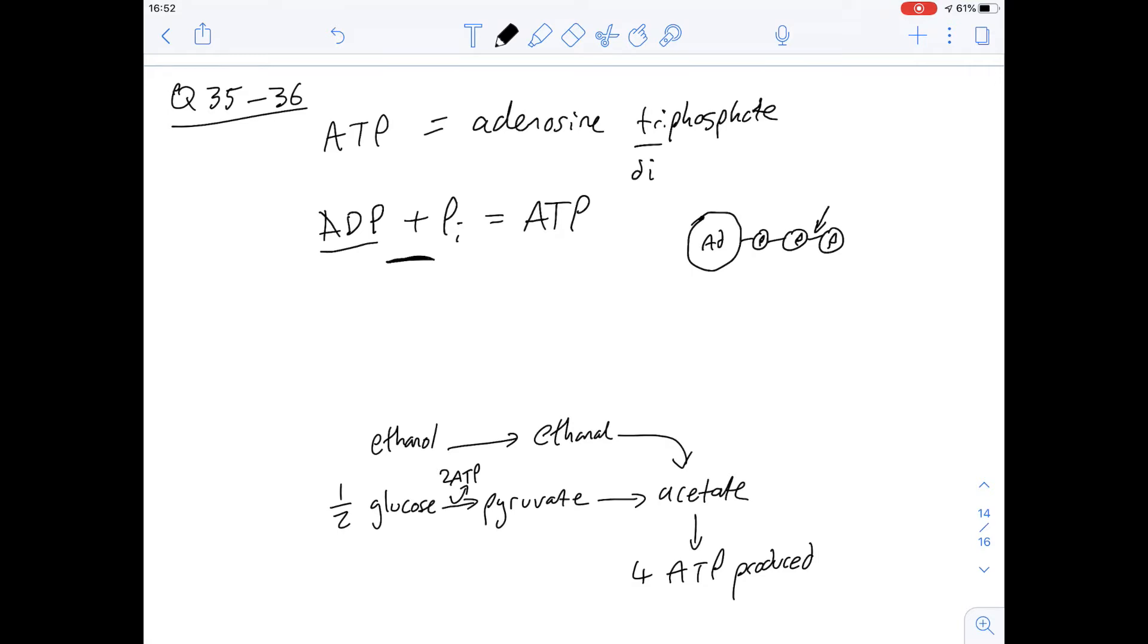So if you labelled glucose, oxaloacetate or NADH, none of the carbon atoms involved in those particular molecules would actually end up in the ADP that's already there. And so you couldn't get carbon-13 labelled ATP by labelling any of those. So that means that the answer for question 35 is D.